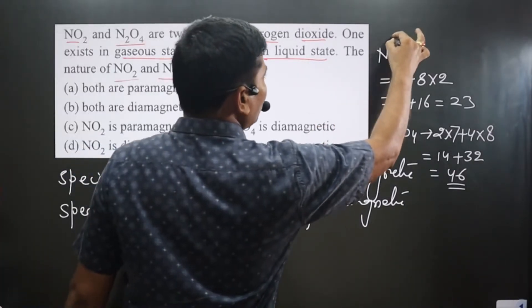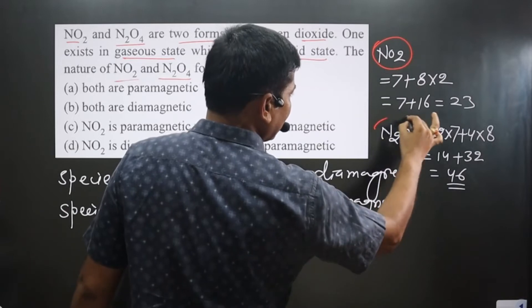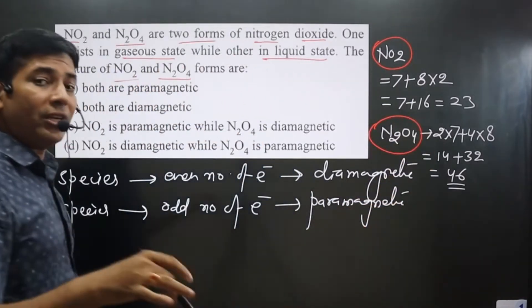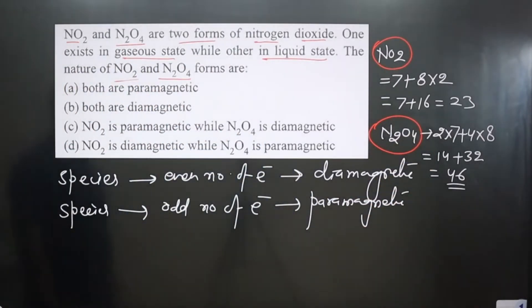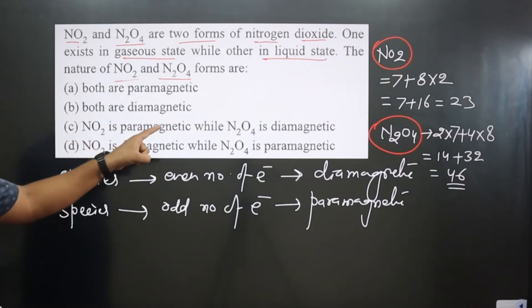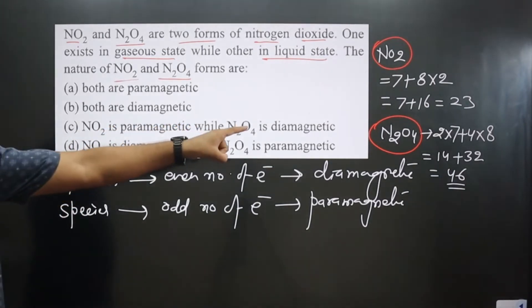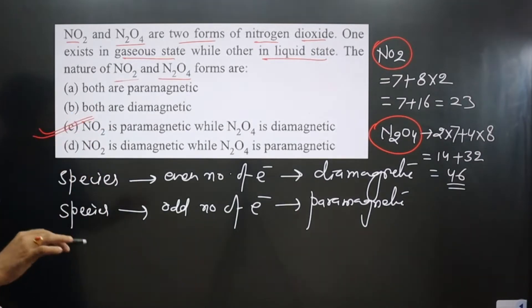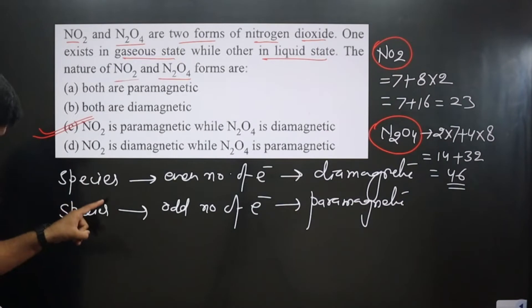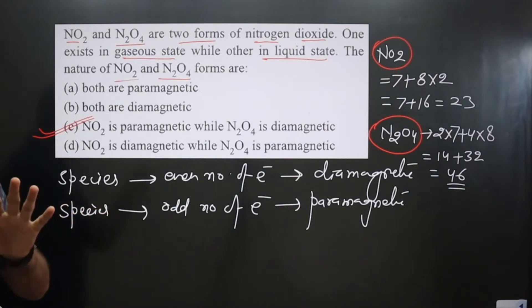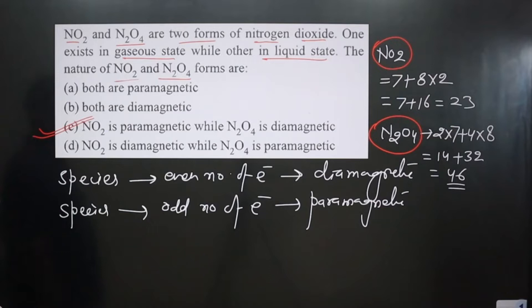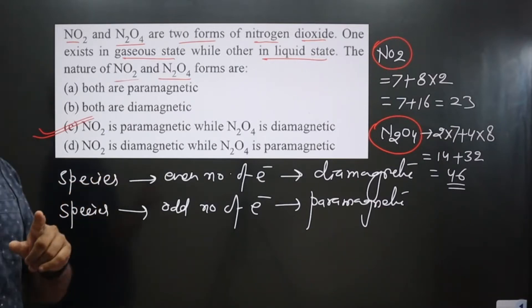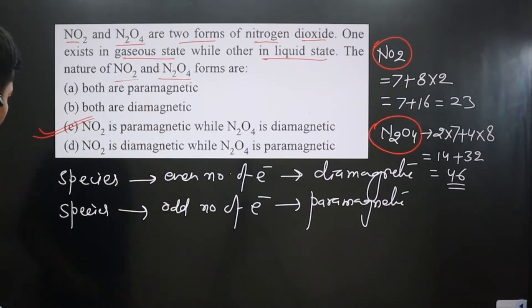So NO₂ is paramagnetic by nature, while N₂O₄ is diamagnetic by nature. Option C is correct. But always keep in mind this condition is not always correct — it is not always true. You can also answer this question by drawing the structure.